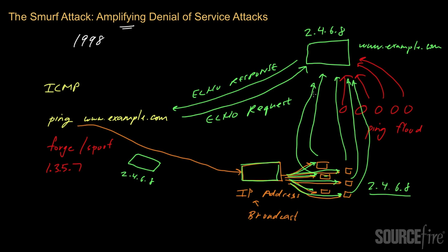The attacker did minimal work — he made a single ping request — and translated it into potentially hundreds of acknowledgements, all pummeling a single target system with traffic. By repeating this procedure, the target system will basically be taken offline. It gets saturated and won't be able to respond to legitimate requests. This attack, which uses the concept of an ICMP broadcast for amplification, is known as the Smurf attack.